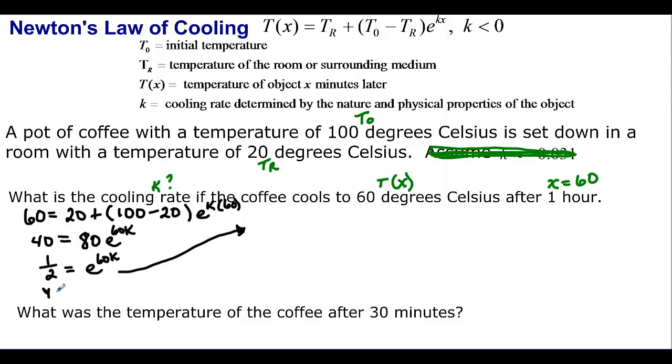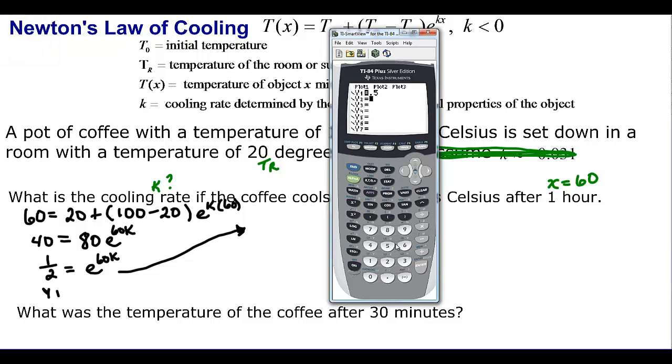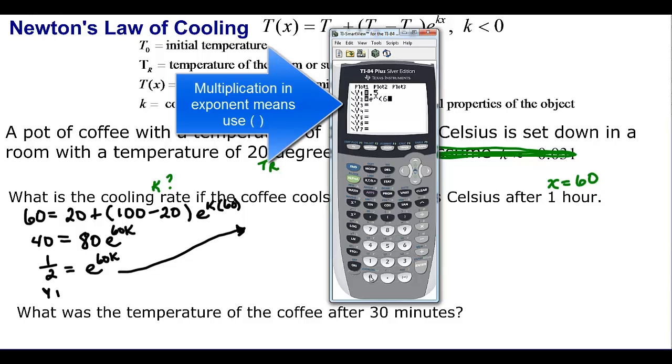This is Y1 down here, and this would be Y2. We clear our Y2, and we have second LN. Remember, that's how you get to E. And then in the parentheses, we have 60X.